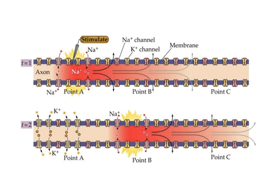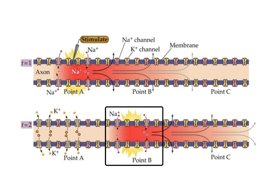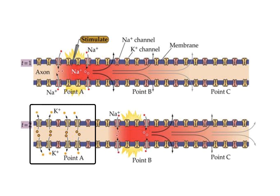Stimulating a neuron opens those sodium channels so that sodium flows into the cell, increasing the positive charge within the cell, which stimulates other channels down the road to open up and propagates the action potential down the neuron. At the same time, behind the action potential the system resets, moving potassium into the cell and sodium outside the cell. This propagates down the axon, increasing the sodium concentration as it moves down, but then re-establishing the sodium-potassium gradient as the action potential passes.